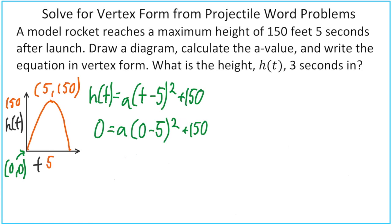So if we look at the parentheses first, that would be negative 5 squared. That's 25. And then I'll go ahead and move the positive 150 to the left side and just switch around my a times 25 to 25a. Now all we have to do is divide both sides by 25 and we get our a value of negative 6.